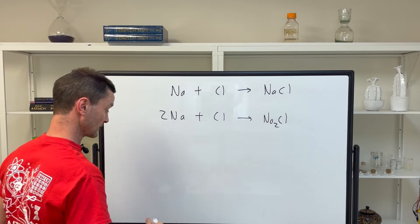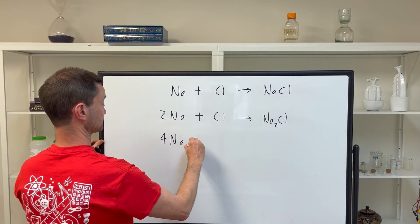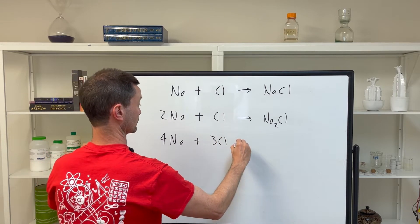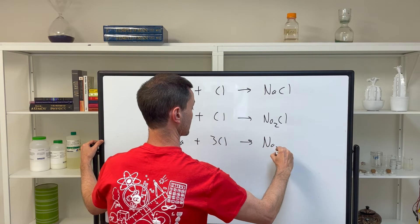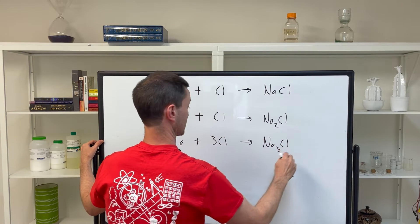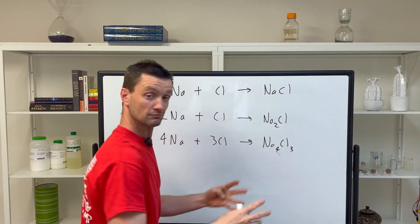But what if it takes four sodiums to combine with three chlorines to make Na4Cl3, table salt?